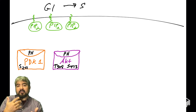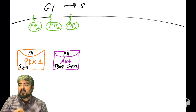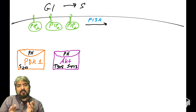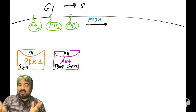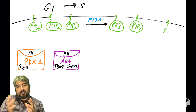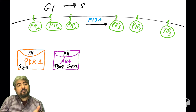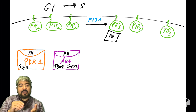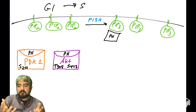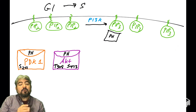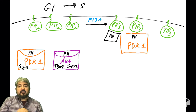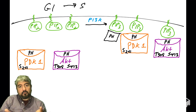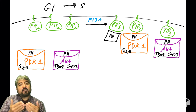When a cell gets a signal to grow — for example, exposure to growth factors that bind growth factor receptors — this triggers activation of PI3 kinase, which converts PIP2 into PIP3. With PIP3 present, proteins with PH domains bind it, changing their conformation and activity. Both AKT and PDK1 will bind PIP3, bringing them into close proximity at the inner surface of the plasma membrane.